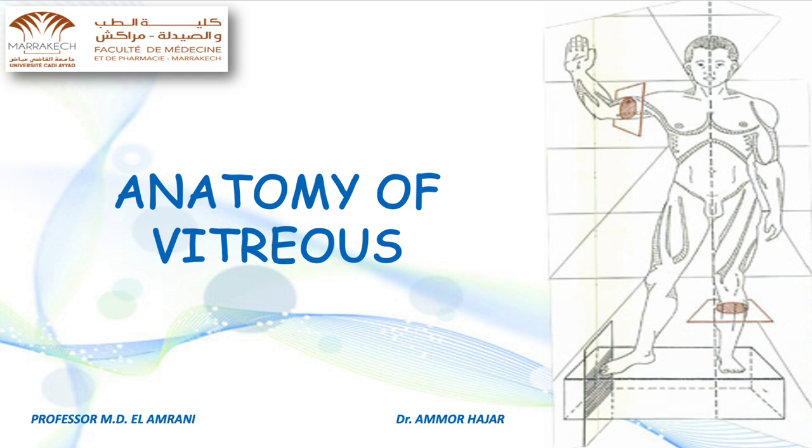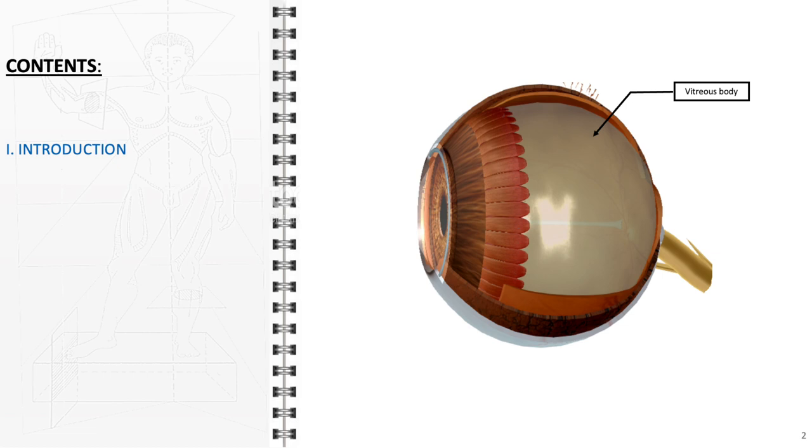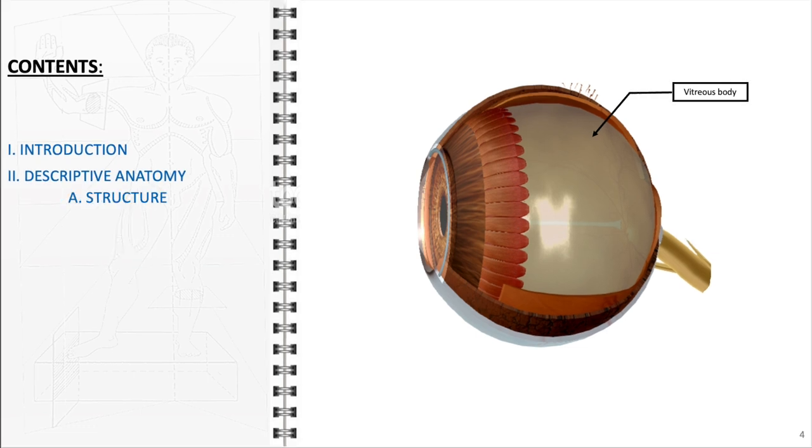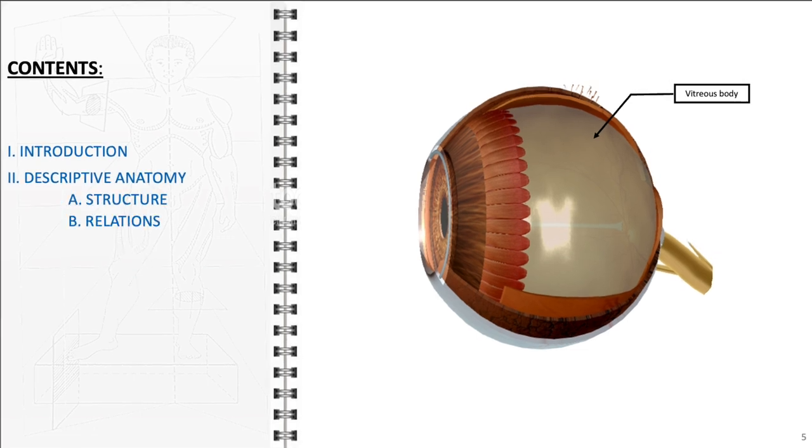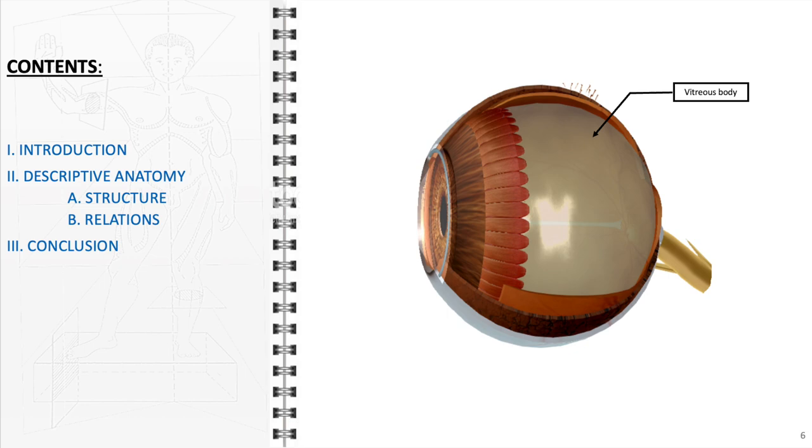In this video, we will discuss the anatomy of the vitreous body. We will begin with an introduction that describes the characteristics of the vitreous body. Following this, we will delve into the structure of the vitreous and explore its anatomical relationships. Finally, we will conclude with some key takeaways.